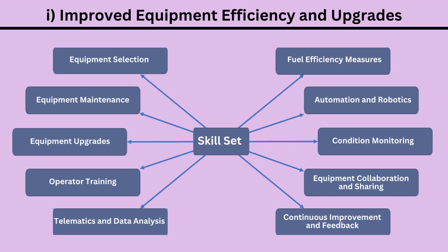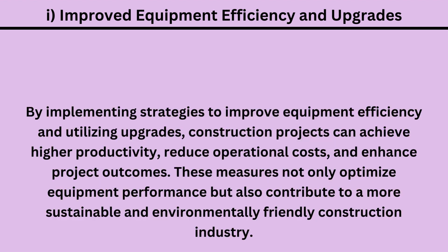More information on increasing equipment efficiency and upgrading is available here: 1. Equipment Selection, 2. Equipment Maintenance, 3. Equipment Upgrades, 4. Operator Training, 5. Telematics and Data Analysis, 6. Fuel Efficiency Measures, 7. Automation and Robotics, 8. Condition Monitoring, 9. Equipment Collaboration and Sharing, 10. Continuous Improvement and Feedback. By implementing strategies to improve equipment efficiency and utilizing upgrades, construction projects can achieve higher productivity, reduce operational costs, and enhance project outcomes. These measures not only optimize equipment performance, but also contribute to a more sustainable and environmentally friendly construction industry.